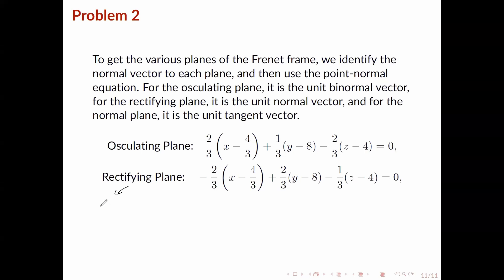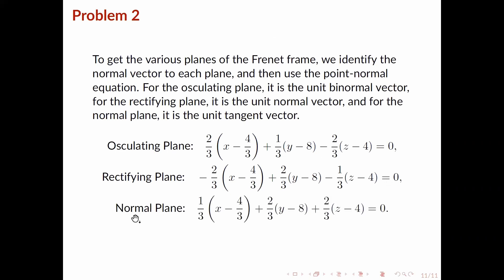Next we can calculate the rectifying plane. Recall the point here is r(2) again, and the normal vector is n(2). Given these two we can solve for the equation of the rectifying plane. Finally we calculate the normal plane, where the normal vector to the plane is the tangent vector t(2). That's the solution for this problem — thank you for listening.